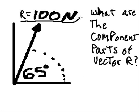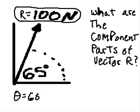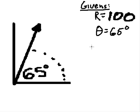Given R equals 100 newtons and theta equals 65 degrees. Question: What are the component parts of vector R?